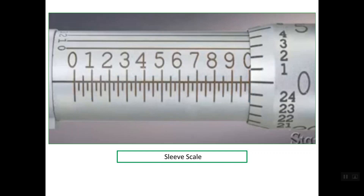Now we can know how to read the main lines on the sleeve scale. For example, this line is line 0, this line is 1 tenth of an inch, this line is 2 tenths of an inch, 3 tenths, 4 tenths, 5 tenths, and so on up to 1 inch, which is the last line on the sleeve scale.